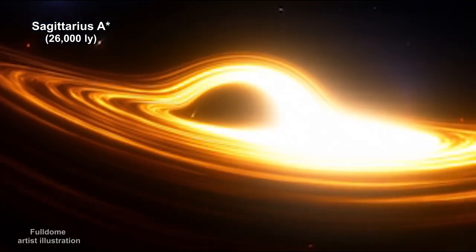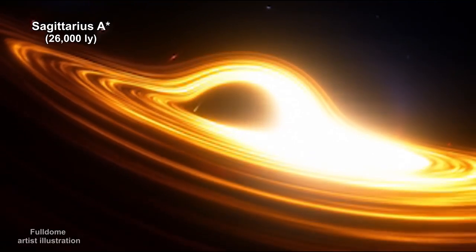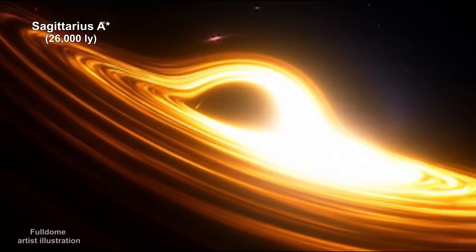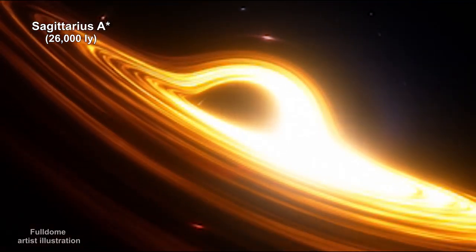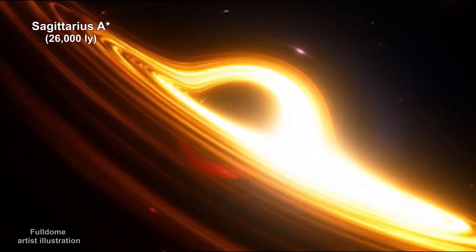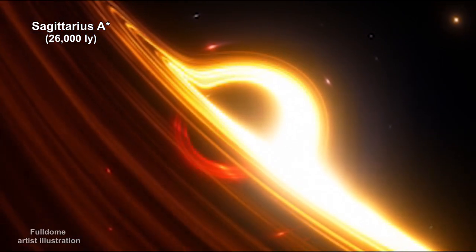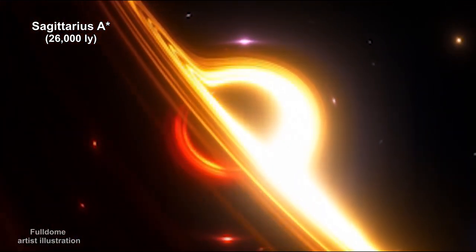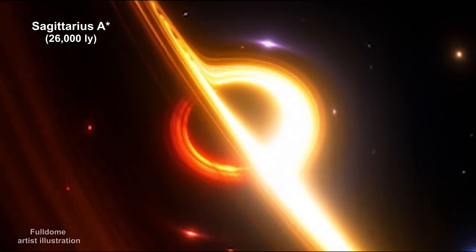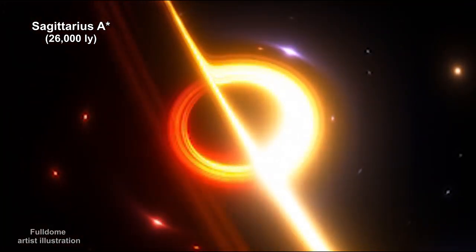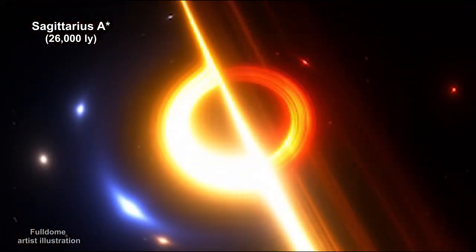There are three classifications for black holes based on their mass: Stellar, with masses up to 10 times the mass of our Sun; Supermassive, with millions or even billions of times the mass of our Sun; and Intermediate, with masses somewhere in between. Sag A-star is a supermassive black hole.